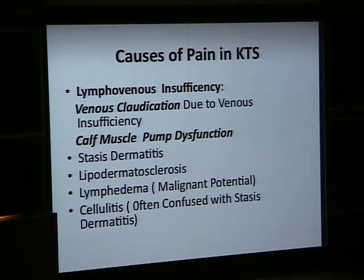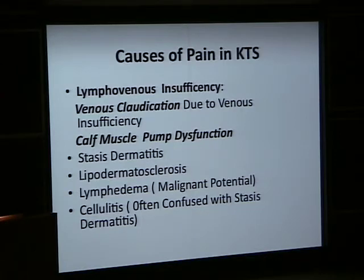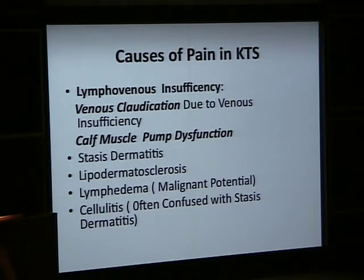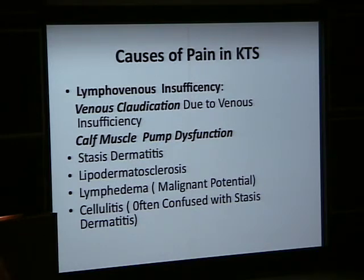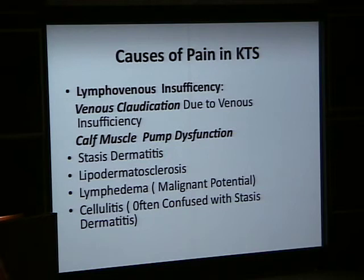Causes of pain in KTS include lympho-venous insufficiency. As a vascular consultant, I see the venous and lymphatic systems as a continuum — the lymphatics pick up where the veins leave off. Patients with KTS usually have a combined problem with abnormality of both veins and lymphatics. In patients without severe chronic venous insufficiency or leg ulcerations, if you palpate the leg you will see a kind of moisture on the skin surface — that is actually lymphatic drainage, not drainage from chronic venous insufficiency. That is a very important distinction.